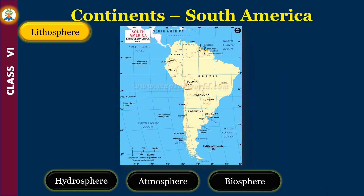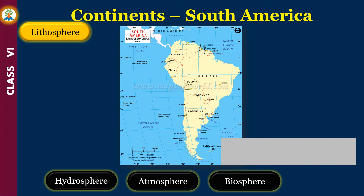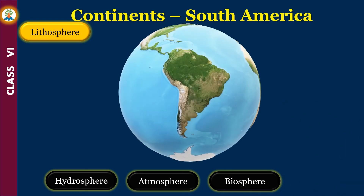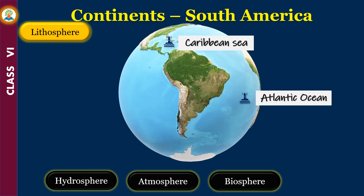South America is the fourth largest continent of the world. It lies between 12 degrees north and 55 degrees south latitudes, and 35 degrees west to 81 degrees west longitudes. South America is surrounded by oceans on almost all sides: the Caribbean Sea in the north, the Atlantic Ocean in the east, and the Pacific Ocean in the west.